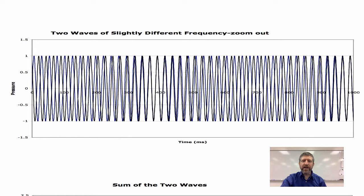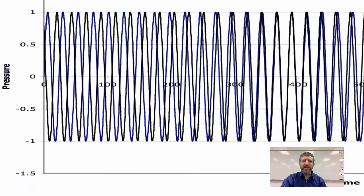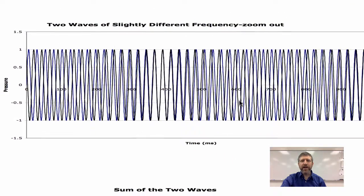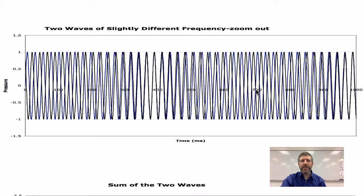If you look carefully, you'll see that right around 100 milliseconds they're completely out of phase — one has a compression when the other has a rarefaction. But right around 400 milliseconds, they're exactly in phase: compression on compression, rarefaction on rarefaction. And that happens again later — at 700 milliseconds they're completely out of phase again, and at 1,000 milliseconds they're back in phase.